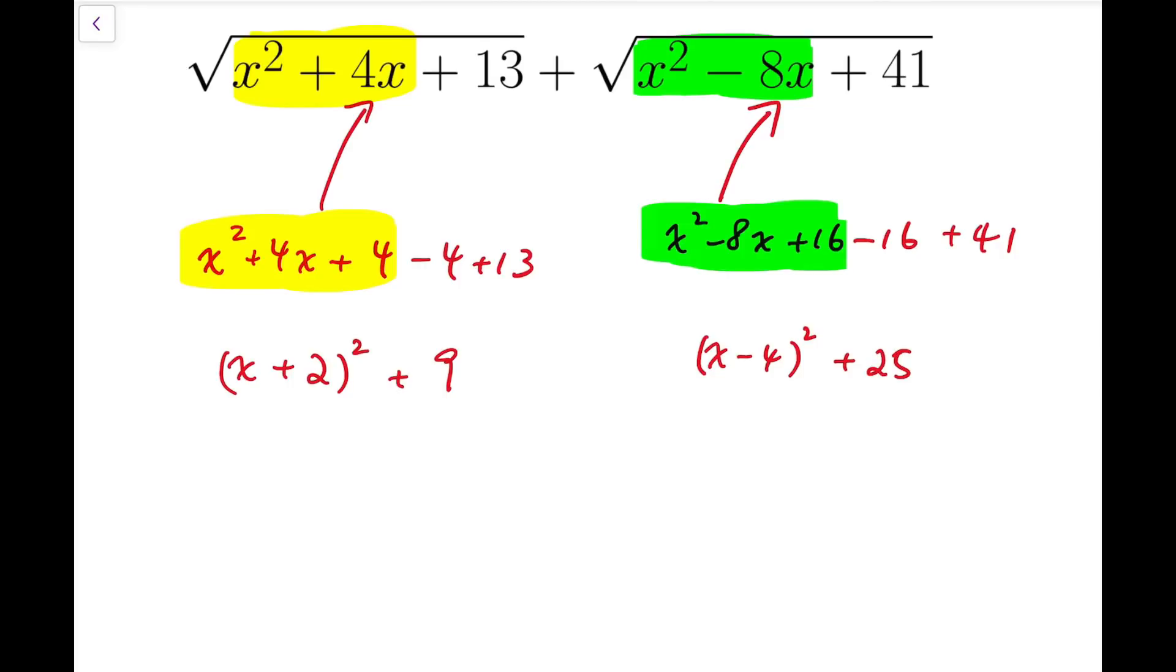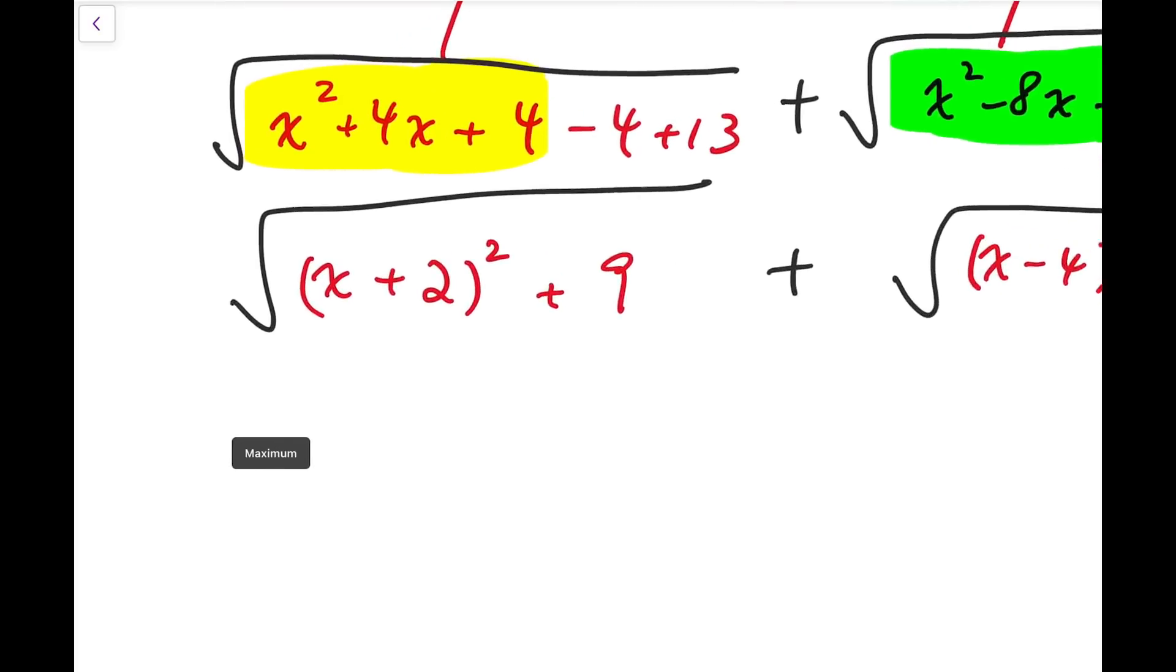So I have x plus 2 all squared plus 9 and x minus 4 all squared plus 25. Let me add the square root signs back to it. We're supposed to add them up. Now in fact, for the first square root, it's actually very close to something called the distance formula.